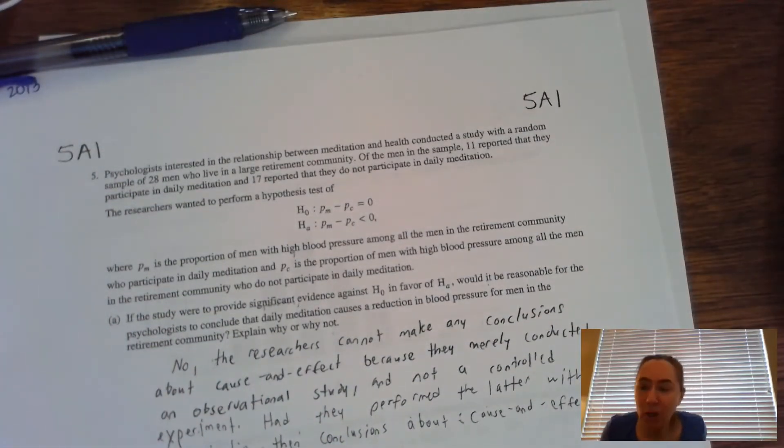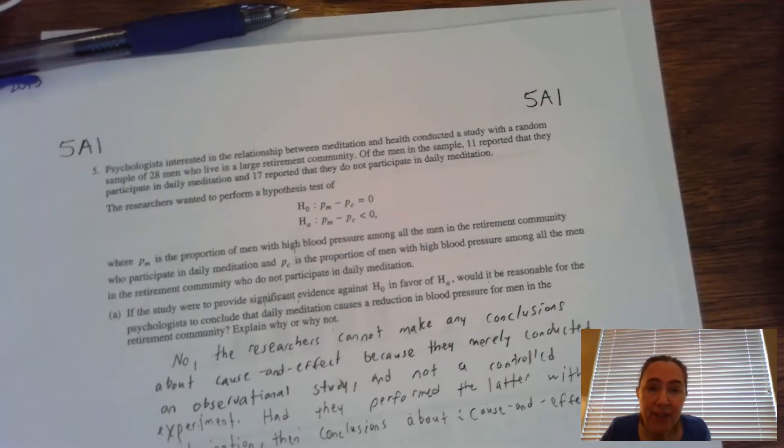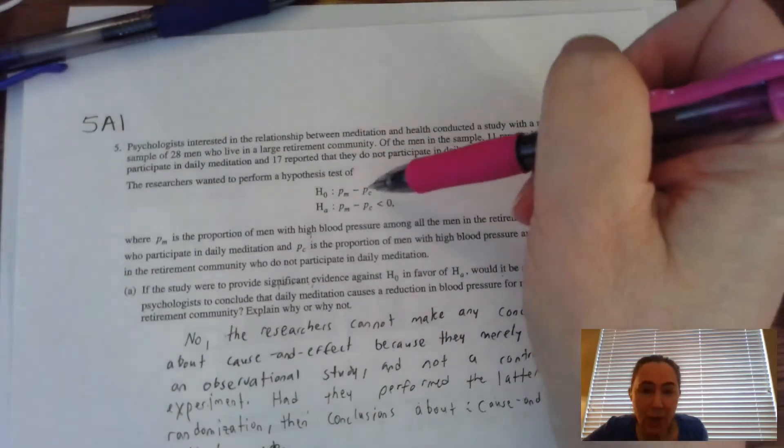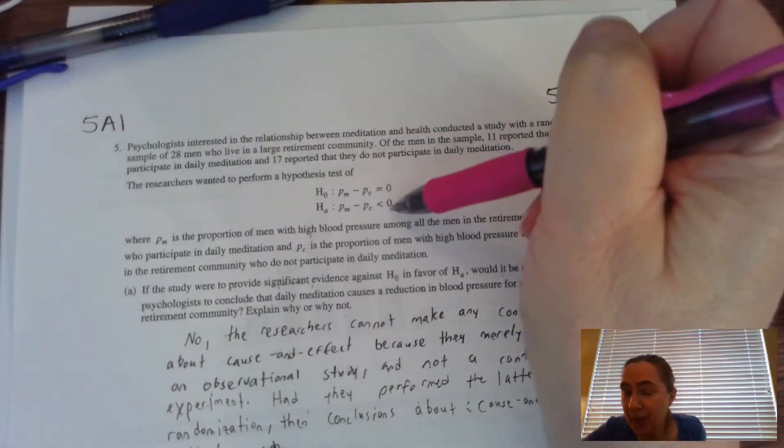Hi, we're going to take a look at the grading of a question, an FRQ from 2013 AP's test, question number five. And you can see that this question right here, you can tell on the outset that there's some kind of inference test going on.